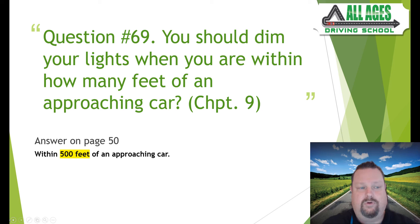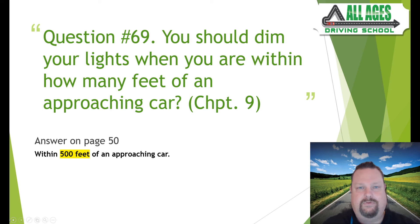Question number sixty-nine: you should dim your lights when you are within how many feet of an approaching car? Chapter nine, page 50. Within 500 feet of an approaching car, switch to low beams. In rural areas with brights on, once you see an approaching vehicle within 500 feet, dim your lights to avoid blinding the other driver.